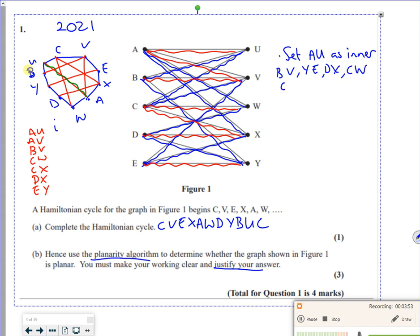So they all cross A, U. Now my issue is that C to W crosses those three as well. So I've got B, V, Y, E, D, X, C, W. They all cross A, U. But C, W crosses B, V, Y, E, and D, X. So that means that it won't work. I can't possibly draw it.